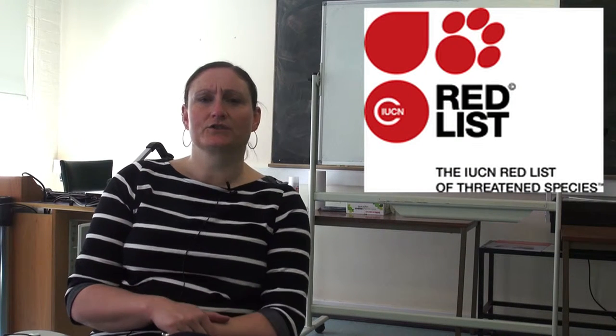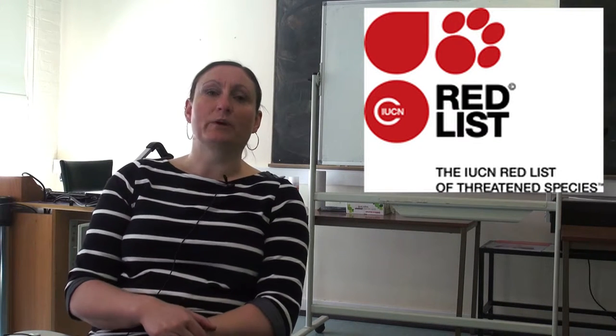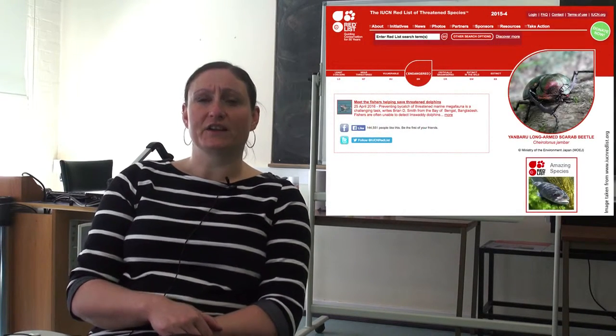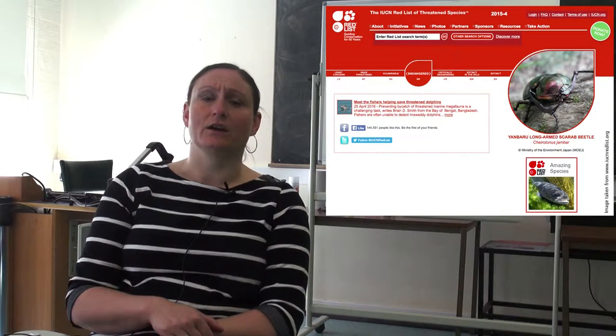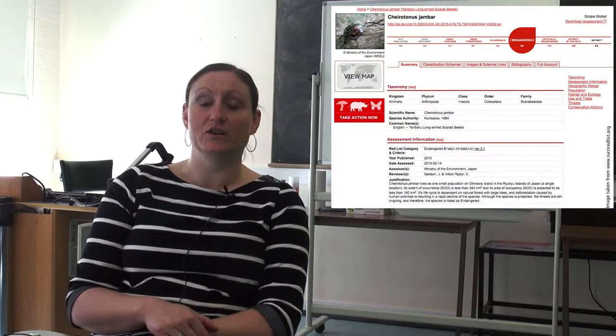There are a few different ways that you can decide if a species is threatened or not. But the principal method used globally is the IUCN's Red List. The IUCN is the International Union for the Conservation of Nature — a really big global organisation covering lots of different aspects of species and ecosystem conservation. One of their biggest outputs is the Red List, which is basically a collection of assessments of different species to see how much risk there is — whether a species is likely to become extinct in the near future.